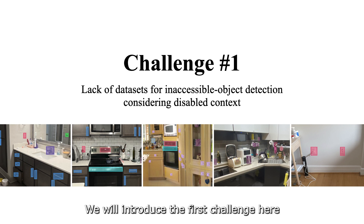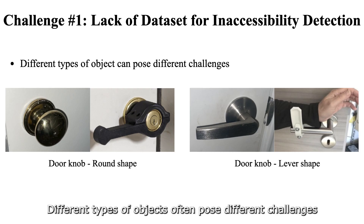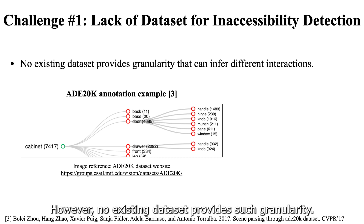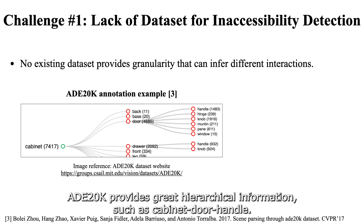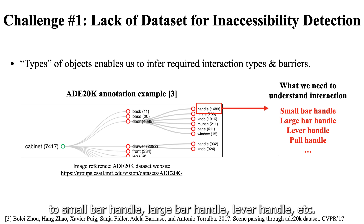We will introduce the first challenge: the lack of a dataset for inaccessible object detection. Different types of objects often pose different challenges, mainly due to varying interactions needed. However, no existing dataset provides such granularity. ADU20K provides great hierarchical information, such as cabinet door handle. Still, we would like to take one step further, to small bar handle, large bar handle, lever handle, etc. This enables us to infer varied interactions.